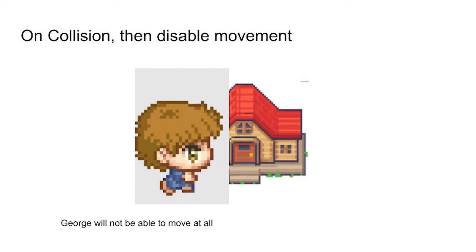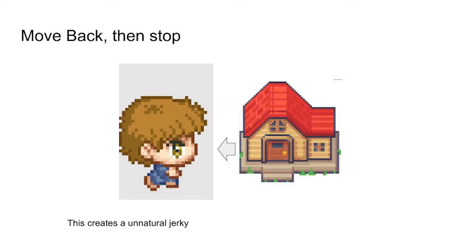As we know the collision, we could disable the movement when George does hit an object. This will stop George, but it will also prevent movement in the left, up, and down directions because George is still collided with the object. One solution would be to automatically move George back at the time of collision and then have him stop. However, this will create a natural jerky motion.